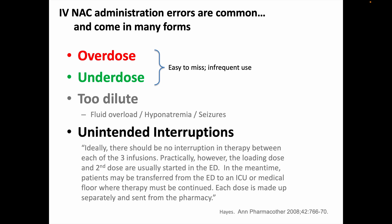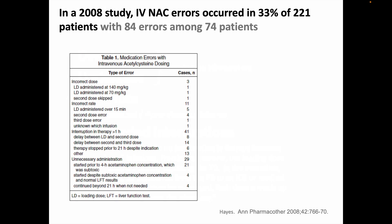There are also unintended interruptions in therapy. Per protocol, there should be no time between the first bag (the IV NAC loading dose) and the second bag, and between the second bag and the third. However, if all the bags are ordered and prepared at once — as per the UCI Medical Center EPIC order set — and follow the patient through the hospital, this can be mitigated. In a 2008 study, researchers found errors in IV NAC administration in one-third of patients, and found several patients had more than one error. The most common kinds of error were interruptions in therapy and some patients getting NAC where it wasn't actually indicated.